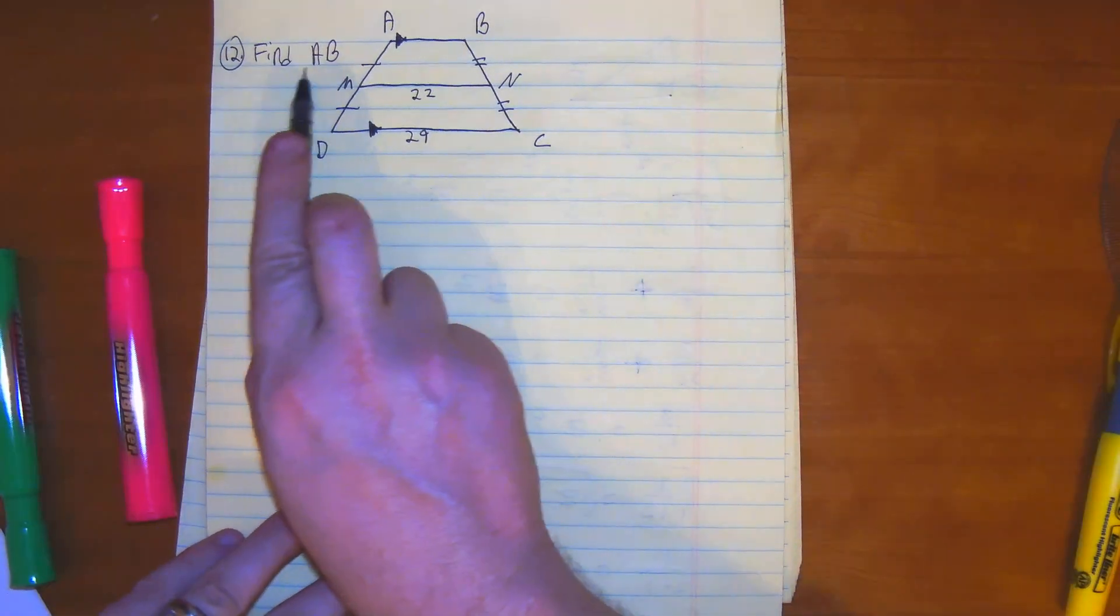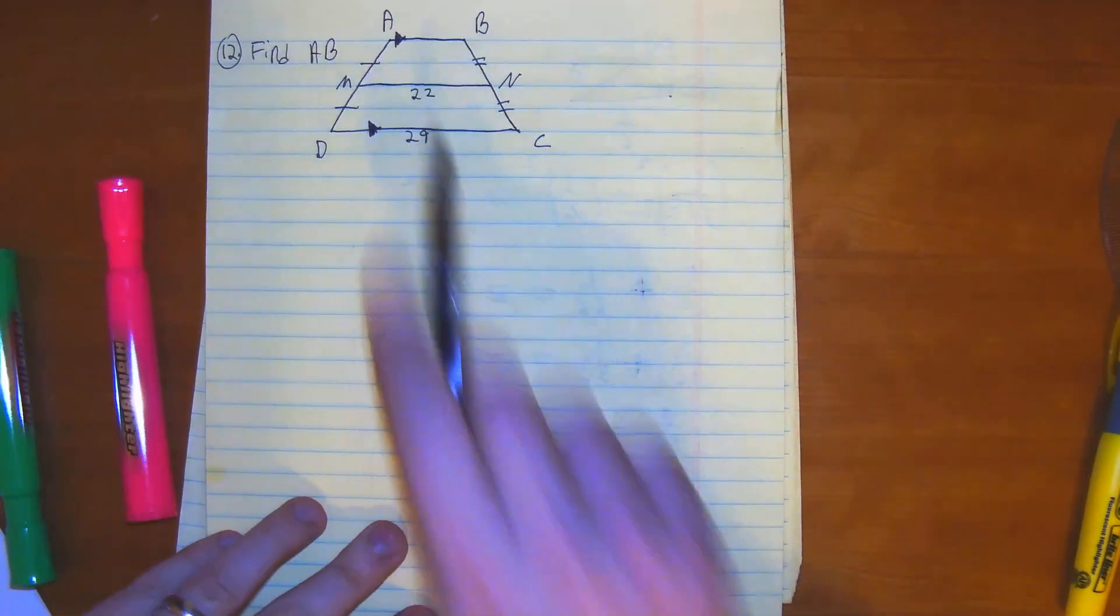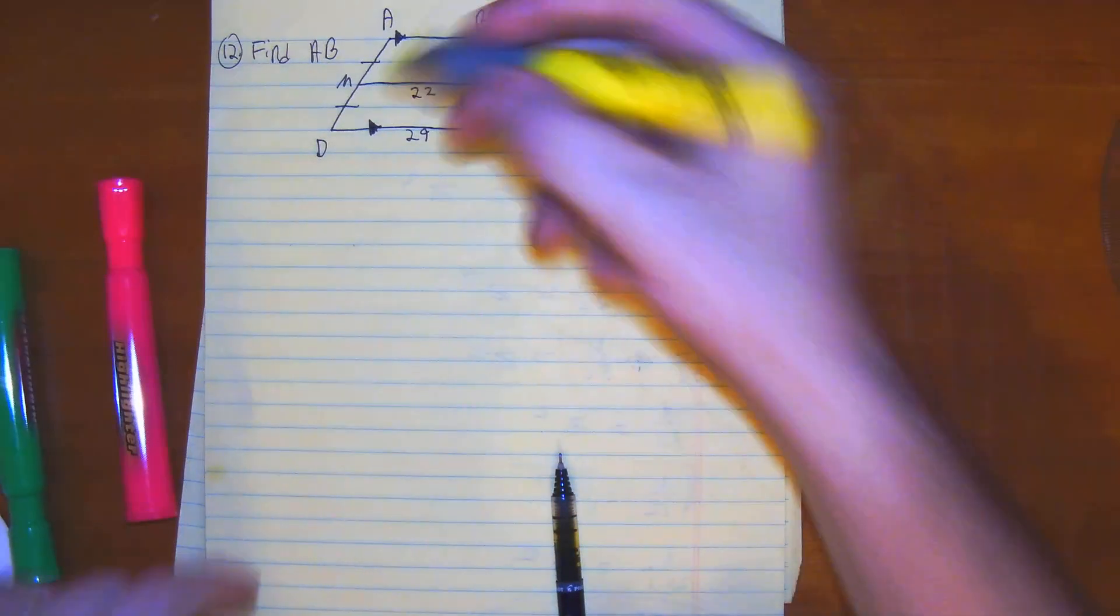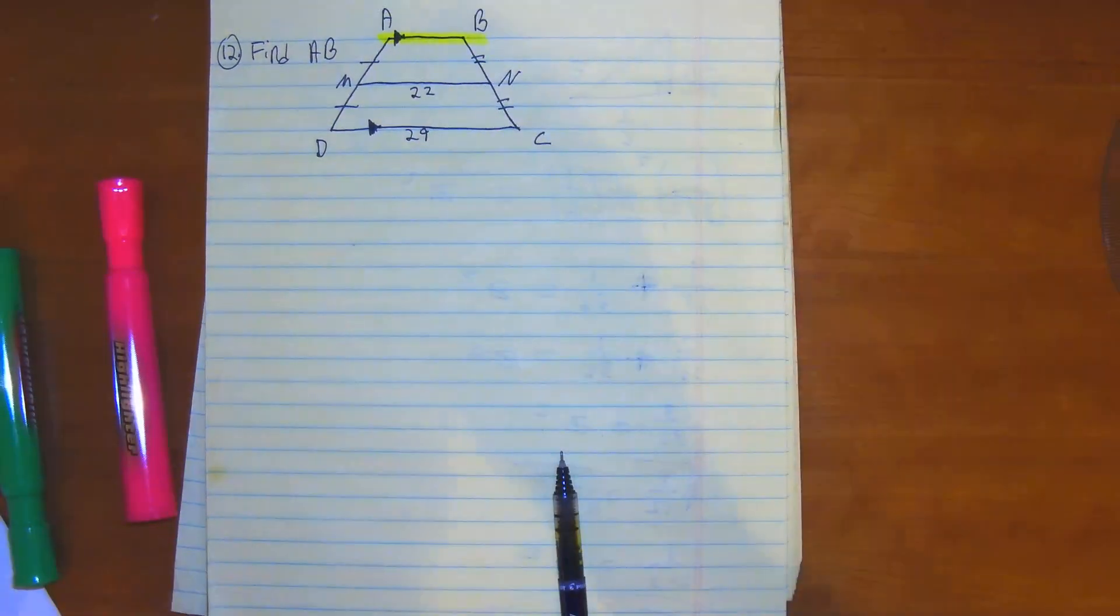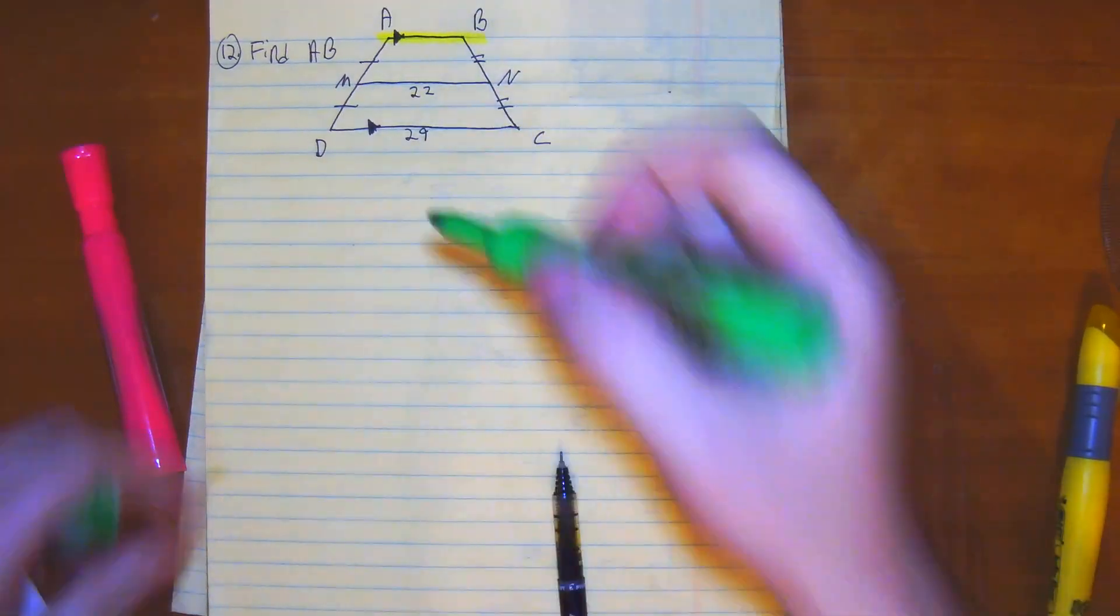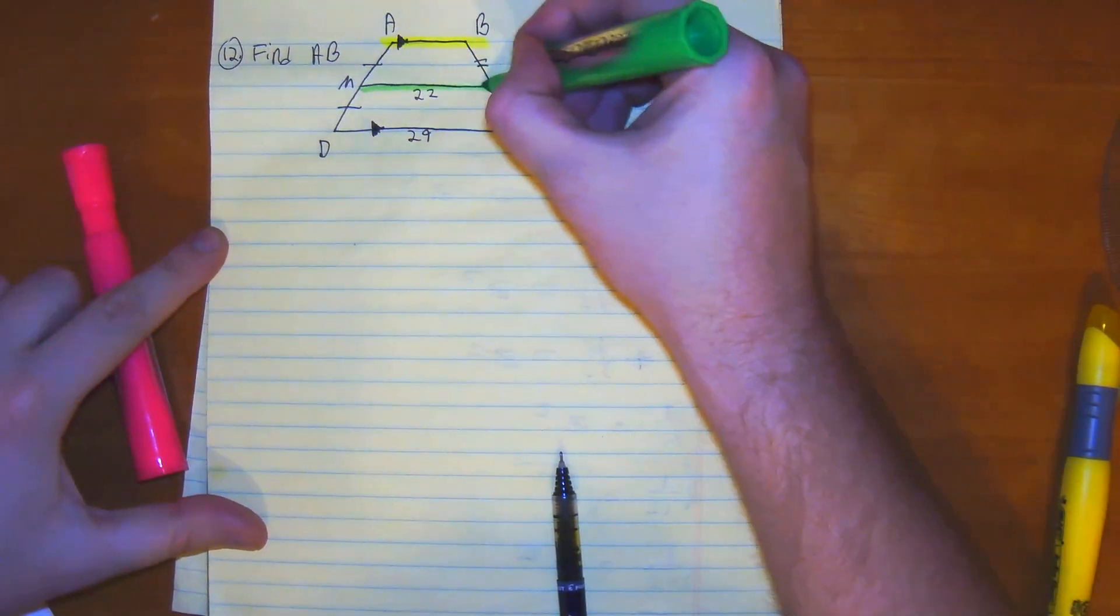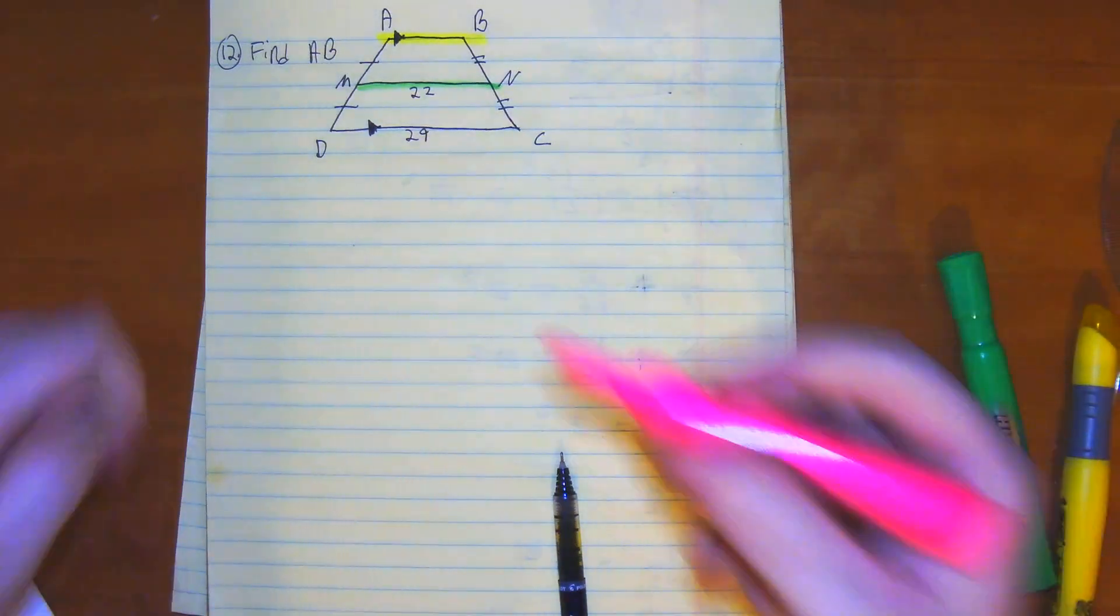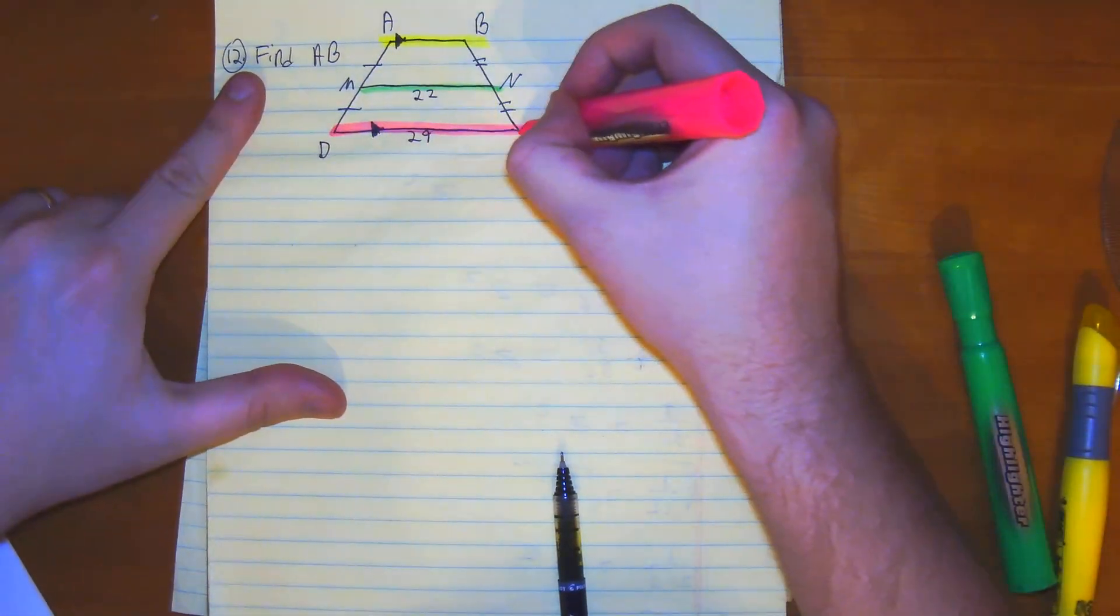Number 12 wants us to find the length of AB, which is right here. Based off the information given, we have a median right here, and then we have another base right here.